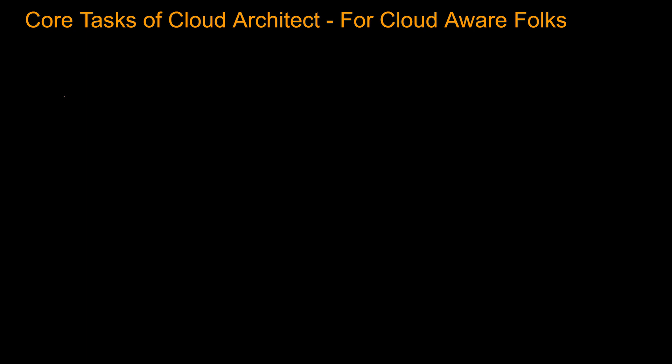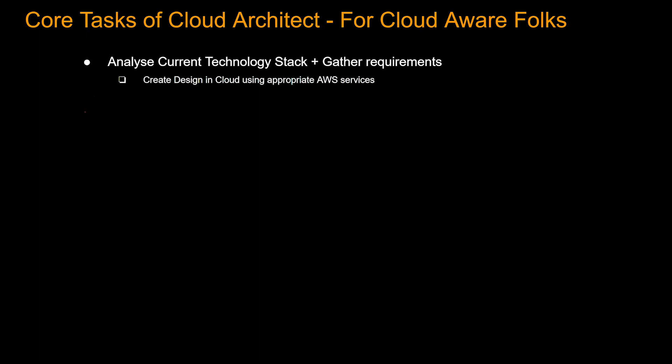Now let's take a look at the core tasks of a cloud architect for cloud-aware folks. Cloud architects analyze the current technology stack, gather requirements, and create designs in cloud using appropriate AWS services. They have knowledge of hybrid ecosystems, best practices, and pros and cons of different services. Why do you have to know the hybrid ecosystem? Because it takes time for big enterprises to move from data center to cloud, so you have to know how to design architecture using components from both data center and cloud.